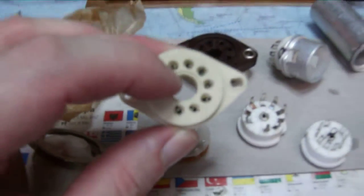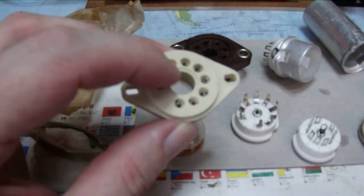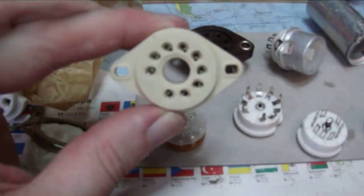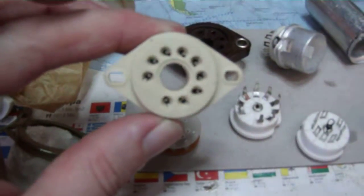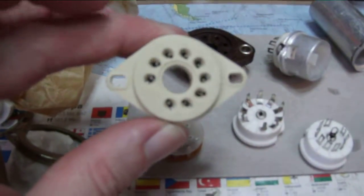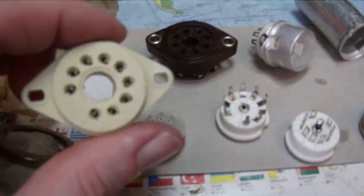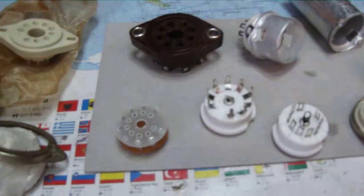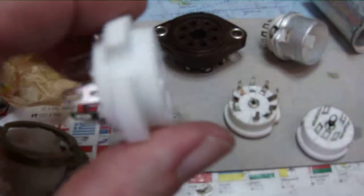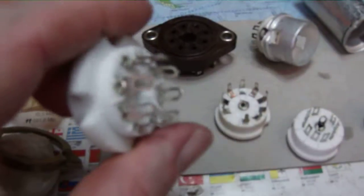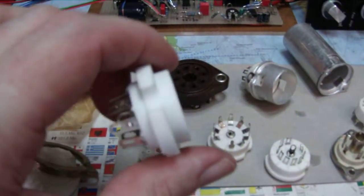This is the average ceramic octal socket. They just have two contact poles for each pin of the tube. Reliability is okay, they are very cheap at about four euros.